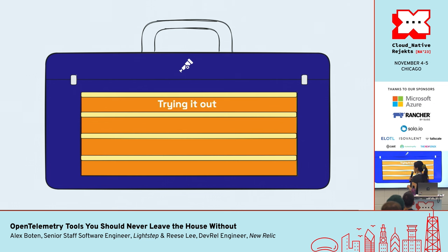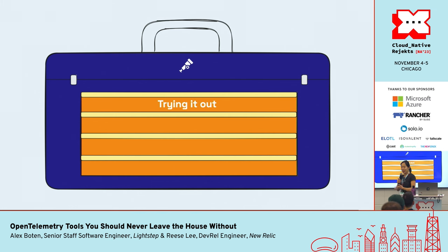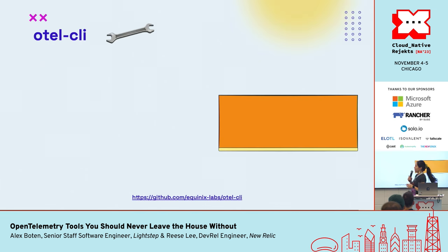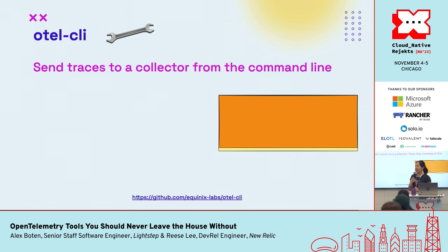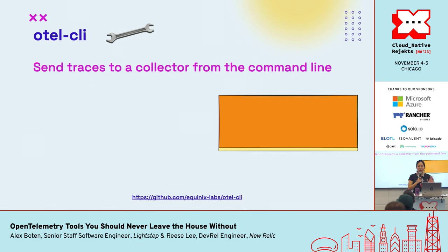We're going to start at the very beginner stage where you're trying out OpenTelemetry, and you probably want something that's easy to set up and allows you to quickly see some OTEL data. The first tool we're going to talk about is OTEL CLI. It is a command line interface tool that allows you to send traces to a collector from the command line. If you're not sure what a collector is, Alex is going to go over that more in depth later on.